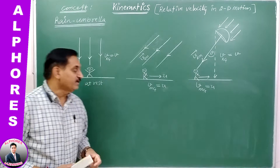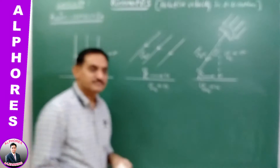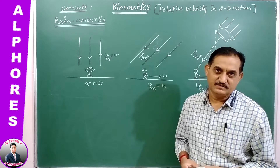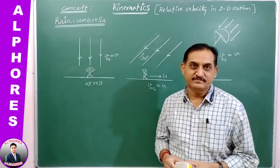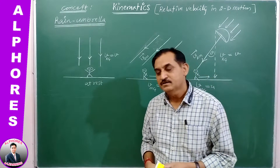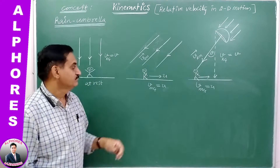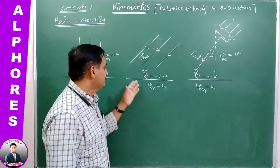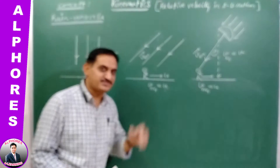What is the rain umbrella concept? Rain is falling vertically with respect to ground. A person standing on the ground at rest finds that rain is falling vertically with a certain velocity — say velocity of rain with respect to ground. Whenever this man starts running horizontally with a velocity u, that is the velocity of man with respect to ground, taking run on a horizontal surface, he finds the rain appears to fall differently.